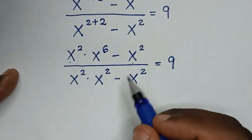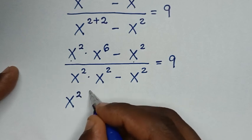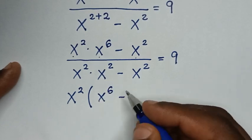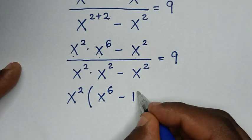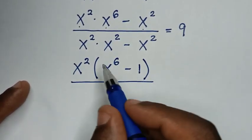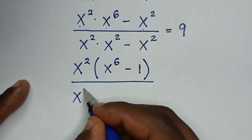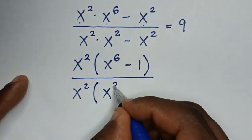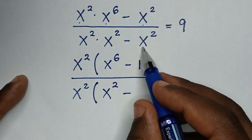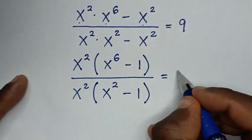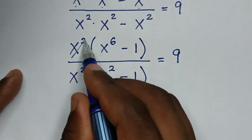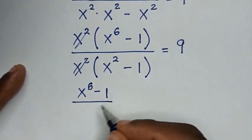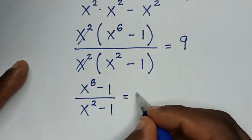From here, x power of 2 is common. So, we take out x power of 2 out of bracket. Now, x power of 2 times x power of 6 divided by x power of 2 — it is x power of 6 minus x power of 2 divided by x power of 2, it is 1 bracket. Then over, we take out x power of 2 out of bracket. Now, x power of 2 times x power of 2 divided by x power of 2 will be 1 of the x power of 2. Then, minus x power of 2 divided by x power of 2, it is 1 bracket, is equal to 9.